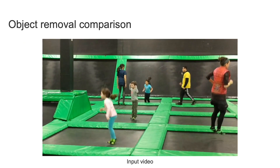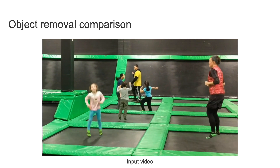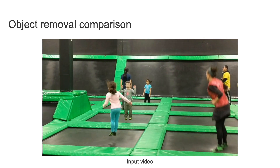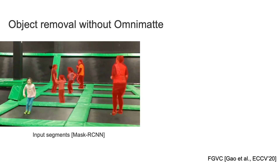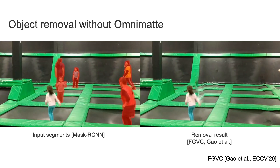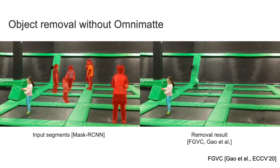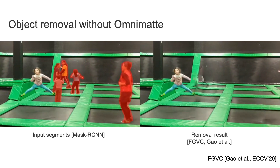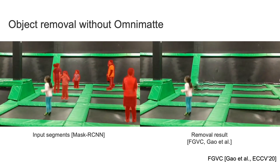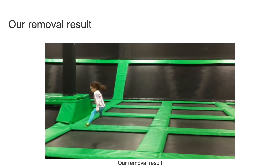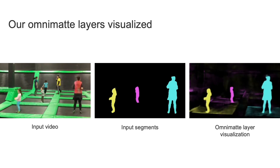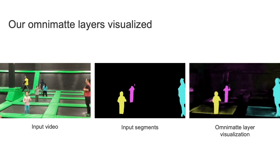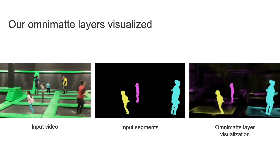Here we show an example where existing tools fail to perform object removal. In an input video of people jumping on trampolines, if we segment the people and input those segments into a video completion method, even though we've removed the people, we're still left with their shadows and trampoline deformations. What we want is for everyone, along with their shadows and trampoline deformations, to be removed — which we can obtain using our omnimats. Each person's omnimat also contains their shadow and trampoline deformations.